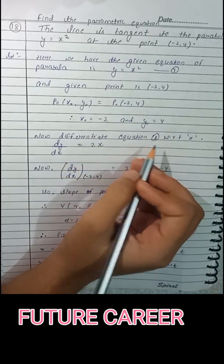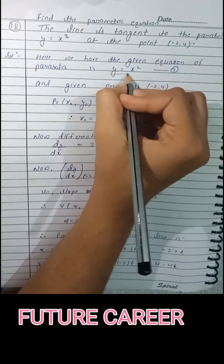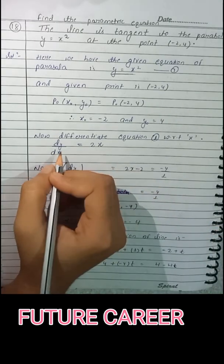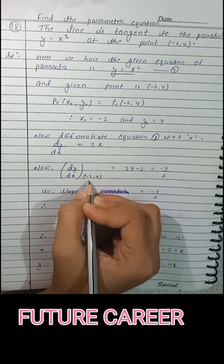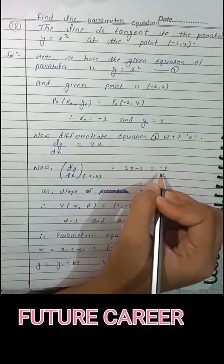Now differentiate equation 1, which is y equals x squared, with respect to x. So dy/dx equals 2x. So dy/dx at point (-2, 4) is 2 times -2, which is -4/1.